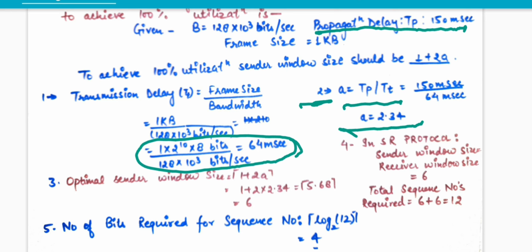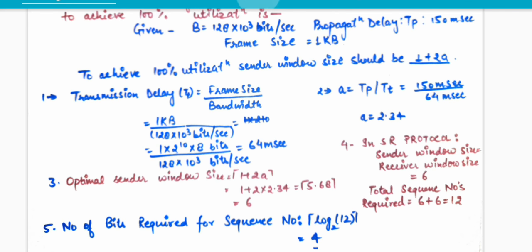Always remember: if you want 100% utilization, the sender window size should always be 1 + 2a. So the optimal sender window size equals 1 + 2a. Putting in the value of a as 2.34, the sender window size comes out to be approximately 6 (using ceiling value).